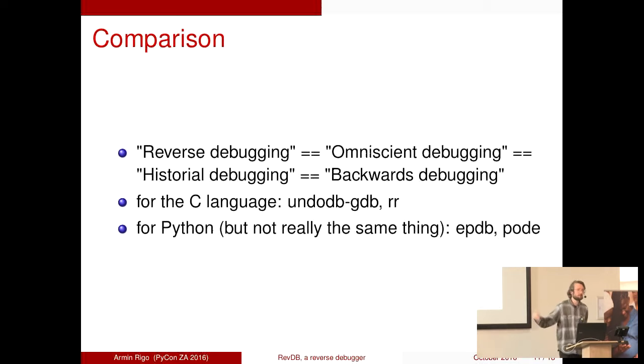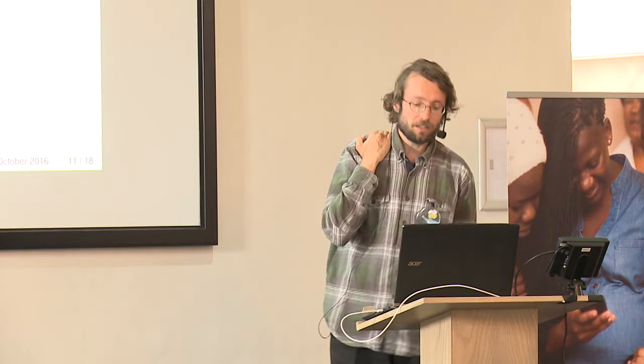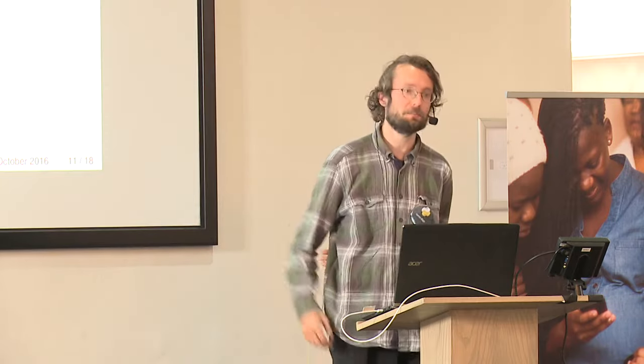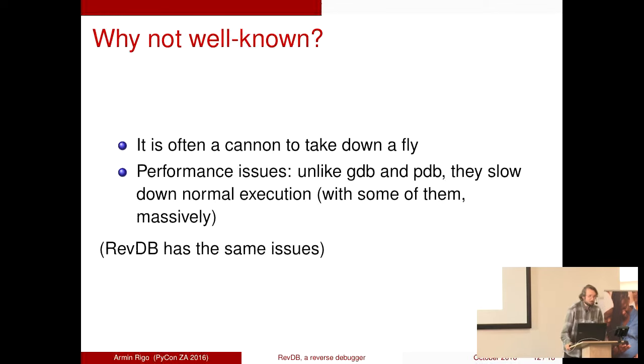And a few comparisons of what I'm showing here with what exists already. Actually, nothing exists for Python, but this kind of debugger do exist. For the C language, for example, we have UndoDB, GDB, and RR. And RR is a project by Mozilla, I think. I picked the name reverse debugger, but there are also other names that are used. So the point is that it's not a very well-known technique. Why is it not well-known? Well, there are several reasons. One reason is that it is like taking a cannon to take down a fly, basically. Often. Not always, but often.